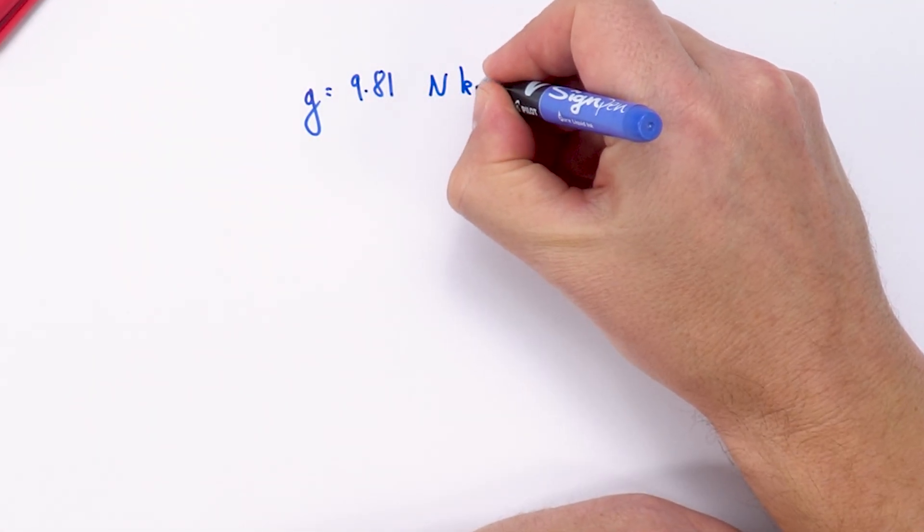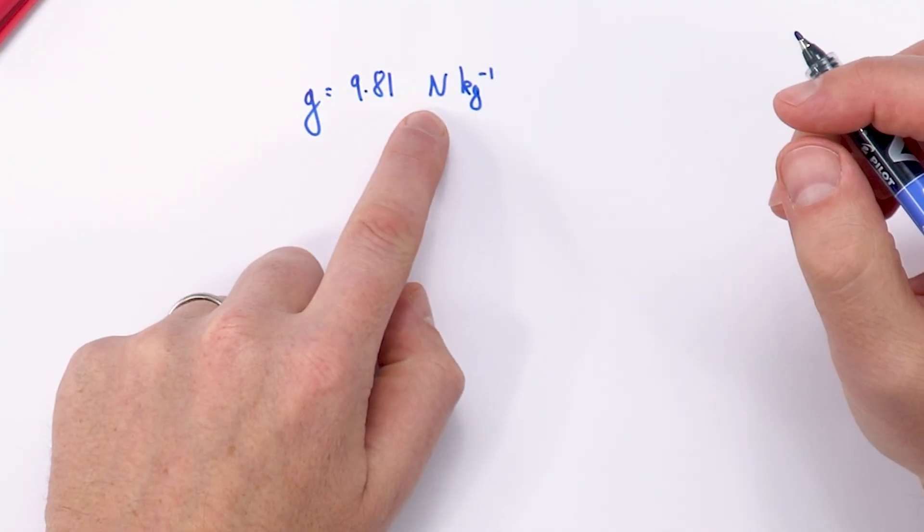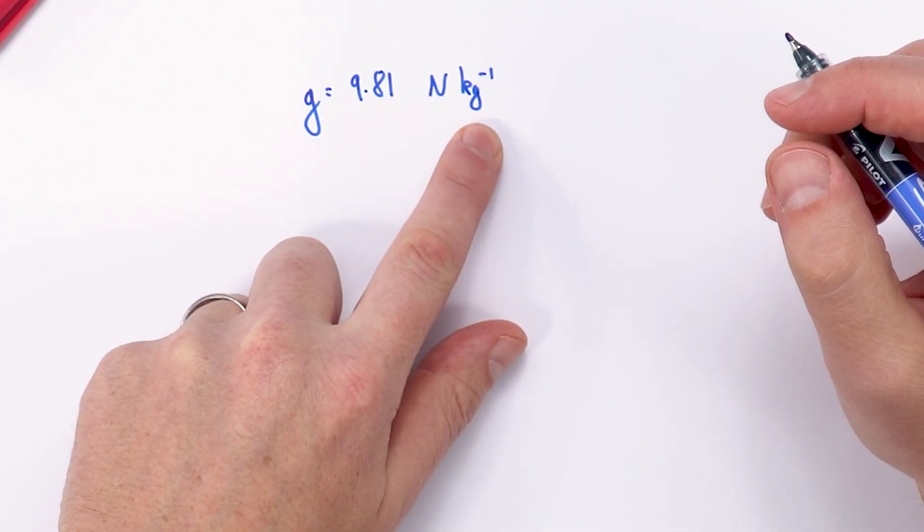Now the units because it's a gravitational field strength should really be expressed in Newtons per kilogram because if you think about what we define gravitational field strength as it's going to be the force per unit mass.